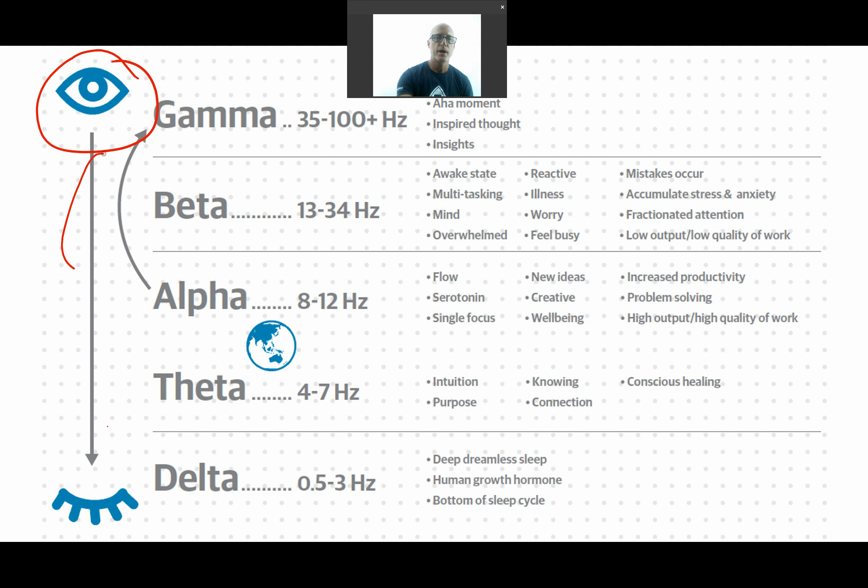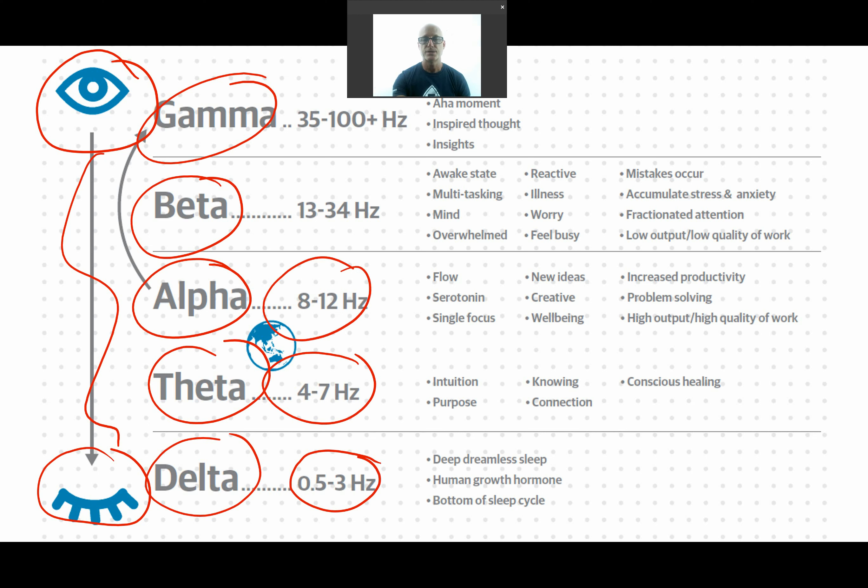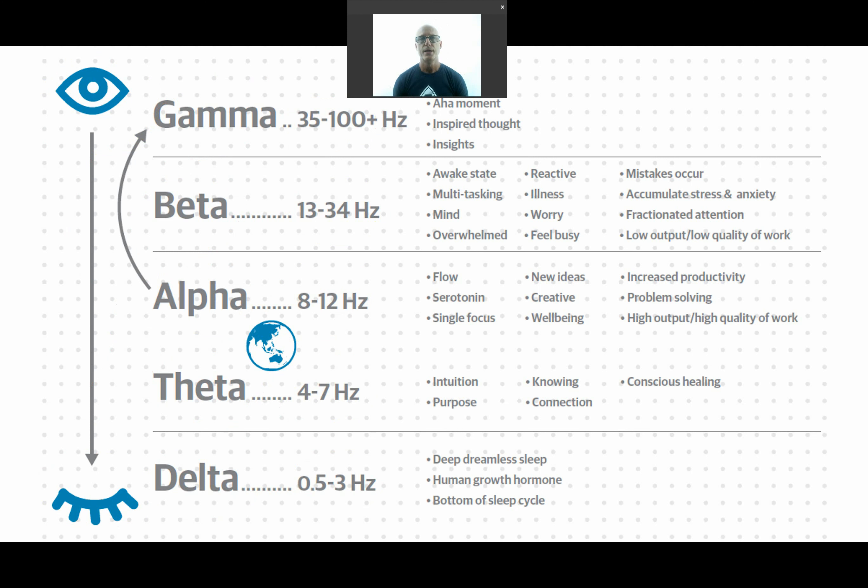From being wide awake to being sound asleep throughout a 24-hour cycle, we move through different brain wave states. There's five predominant ones: delta, theta, alpha, beta, and gamma. These are measured in Hertz through an EEG machine. 0.5 to 3 is delta, theta is 4 to 7, alpha 8 to 12, beta 13 to 34, and gamma is 35 plus.